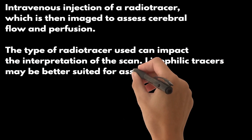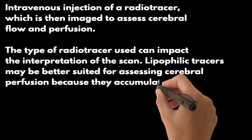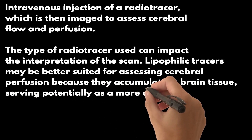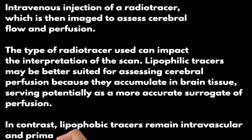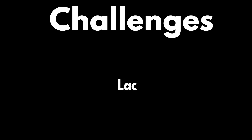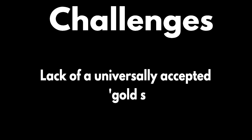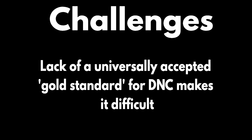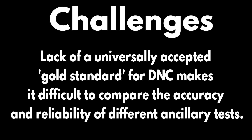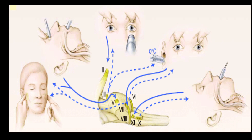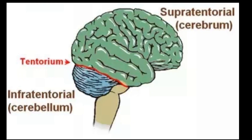The type of radiotracer used can impact interpretation of the scan. Lipophilic tracers may be better suited for assessing cerebral perfusion because they accumulate in brain tissue, serving as a more accurate surrogate of perfusion. In contrast, lipophobic tracers remain intravascular and primarily represent blood flow. While these tests provide valuable insights, they are not without challenges. The lack of a universally accepted gold standard for DNC makes it difficult to compare the accuracy and reliability of different ancillary tests. Clinical diagnosis predominantly emphasizes the assessment of brainstem function, while ancillary testing allows evaluation of both infra- and supratentorial regions.